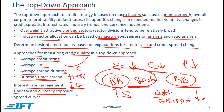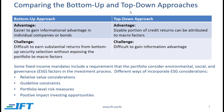Country and currency exposure: if we expect a particular region or currency to do well, we can have greater exposure there. We can also look at spread curves in a top-down analysis for overall industry sectors. A major advantage of the bottom-up approach is that it's easier to gain informational advantage in individual companies or bonds, but it is difficult to earn substantial returns from security selection without exposing the portfolio to macro factors.